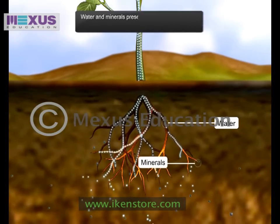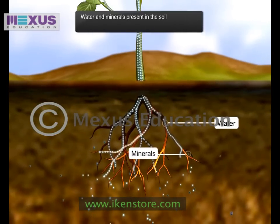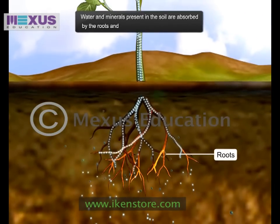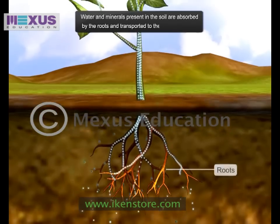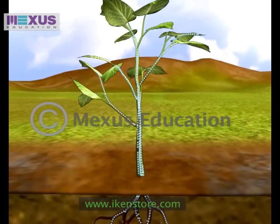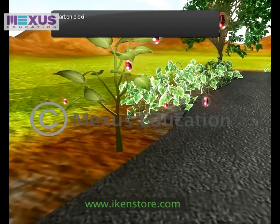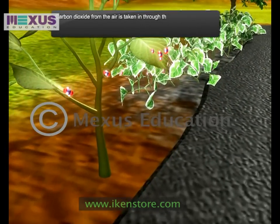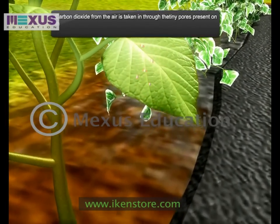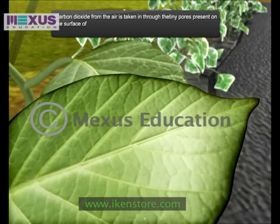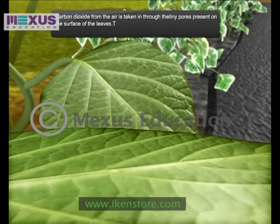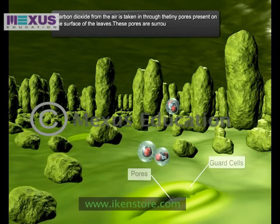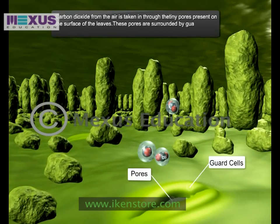Water and minerals present in the soil are absorbed by the roots and transported to the leaves. Carbon dioxide from the air is taken in through the tiny pores present on the surface of the leaves. These pores are surrounded by guard cells and are called stomata.